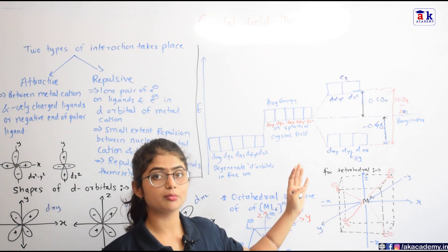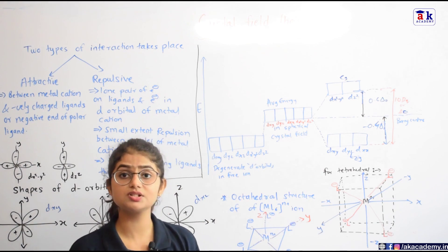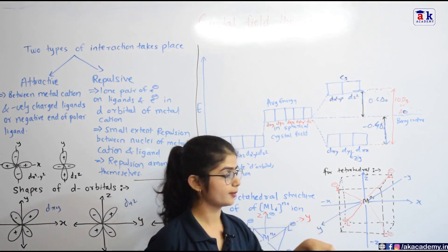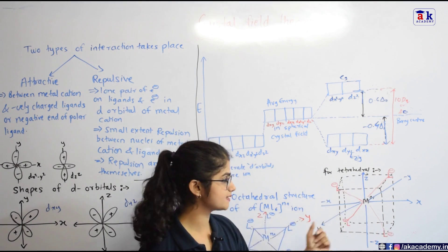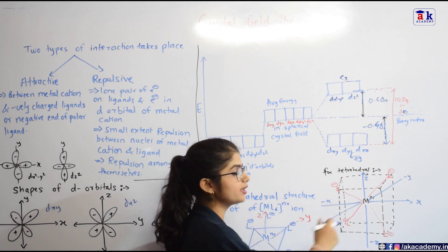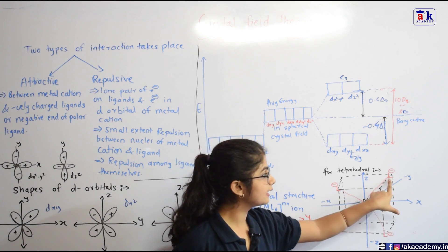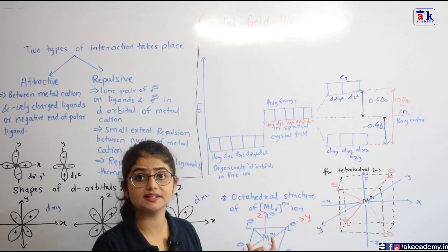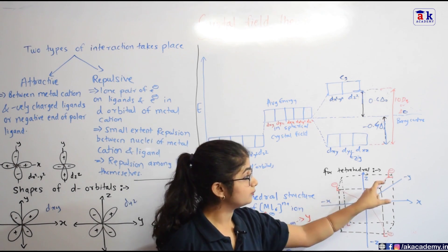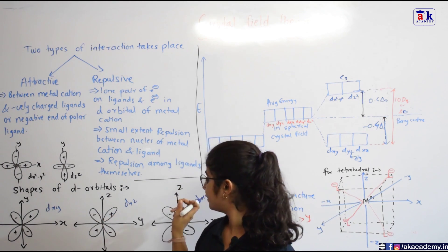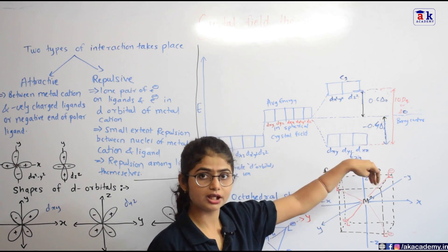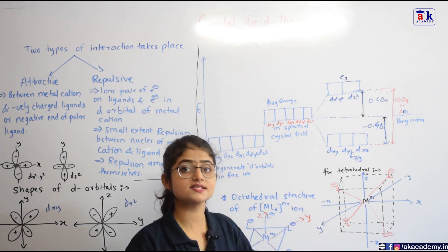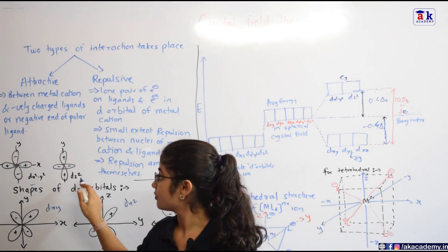Now we discuss crystal field splitting in tetrahedral complexes. Imagine a cube with the metal ion at the center; the four ligands lie at alternate corners of the cube. Looking at the x, y, and z axes, the ligands lie in between the axes — completely opposite to the octahedral case. Therefore, the dxy, dyz, and dxz orbitals, which also lie between the axes, experience more repulsion and their energy increases relative to dx²-y² and dz².